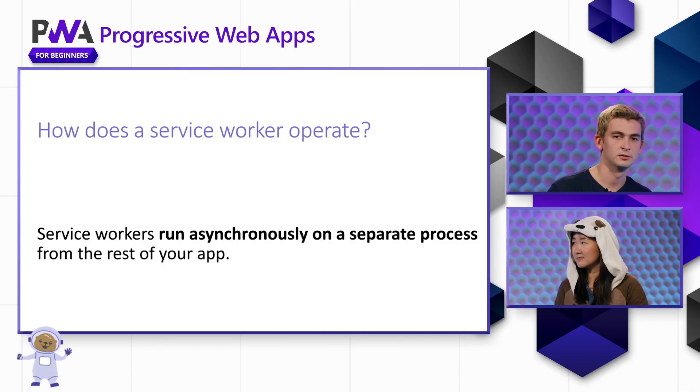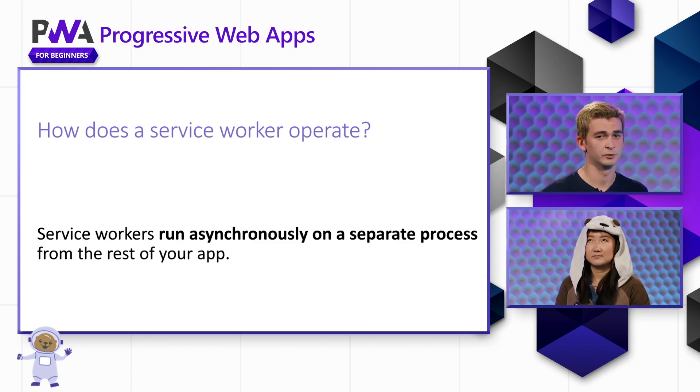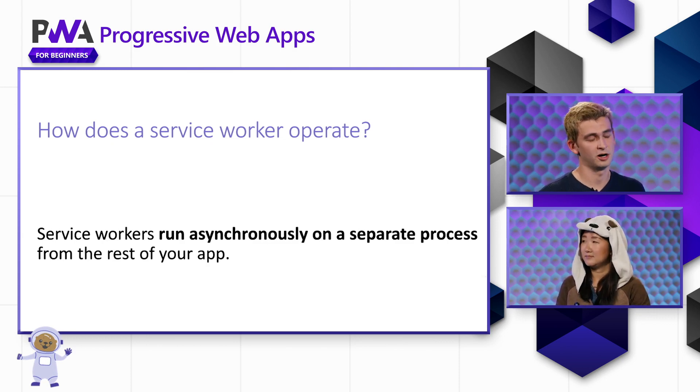How do service workers operate? Without going into too much detail, service workers are a special type of web worker which run on a separate process from the rest of your app. The script that runs in your service worker is non-blocking and primarily centered around event listeners, which means that you don't have to worry about it interfering with the rest of your app. The user can freely interact with your app's interface while the service worker handles events in the background.